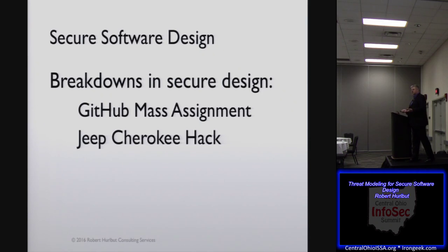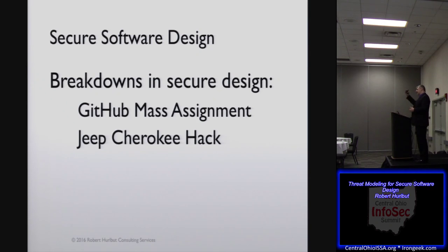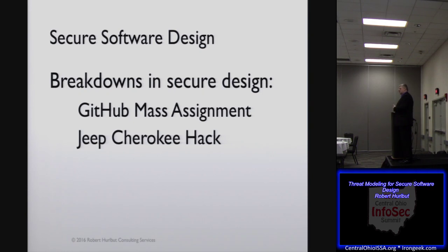Another one, as we saw last summer, was the Jeep Cherokee hack. Two guys found out that through the entertainment system, they were able to get out onto the internet — or vice versa, through having an endpoint and being able to control through the entertainment center system the car itself, which included turning off the car, speeding up the car, and other things like that. Which, of course, is really bad. But that's a design flaw — somebody, for whatever reason, hadn't thought through that if we allow that opening in, it might potentially turn into an attack.